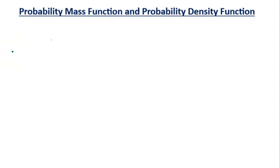The topic is probability mass function and probability density function. For both functions, the notation is given by small f, with subscript capital X — where capital X represents the random variable — and within brackets, small x, which is the value that the random variable can take. So the probability mass function is represented as f subscript X of x.